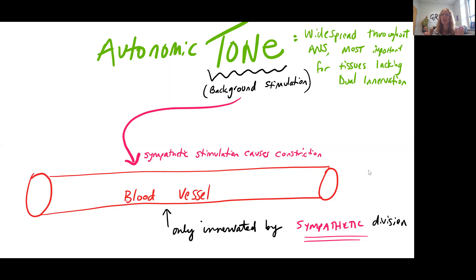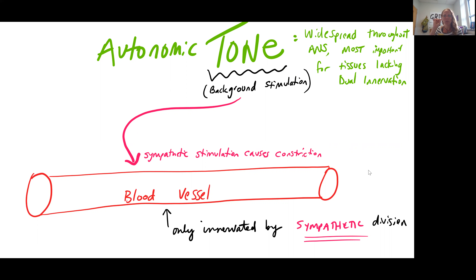We'll see autonomic tone involved in the regulation of those tissues that are not dually innervated. So if you are only being innervated by the sympathetic nervous system, you still need a way of turning it on, turning it off, and making adjustments in between. I like to think of autonomic tone as providing sort of a dimmer switch — it allows you to raise it up a notch, a little bit more, really amp it up, or bring it down in the reverse direction.